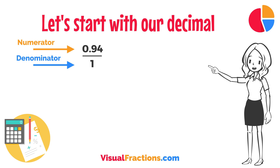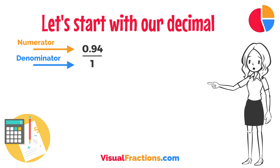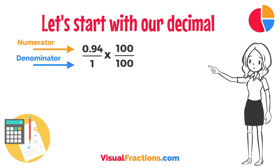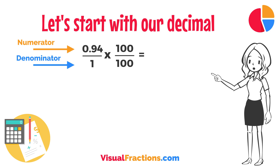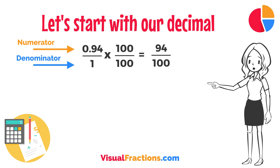This sets up the conversion process where we multiply both the numerator — the decimal — and the denominator, 1, by 100 because there are two decimal places. So, 0.94 times 100 gives us 94, and 1 times 100 gives us 100. This translates 0.94 to the fraction 94 over 100.